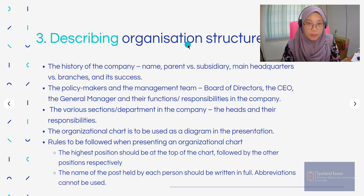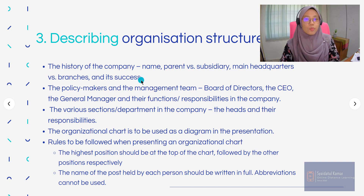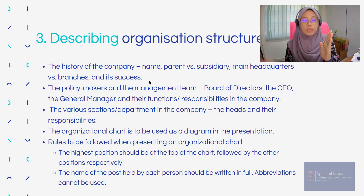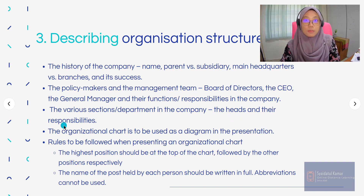Next, you have to describe the organisation structure — for example, the history of the company, the name, whether it is a parent company or a subsidiary company, whether it is the main headquarters or a branch, and its successors. If it is a parent company, does it have smaller companies below it? Also, who are the policy makers and the management team — who are the board of directors, who is the CEO, whether they have a general manager, and what are the functions and responsibilities they hold in the company. You also need to identify the various sections or departments, the heads, and their responsibilities. You must provide an organisational chart as a diagram in the presentation.